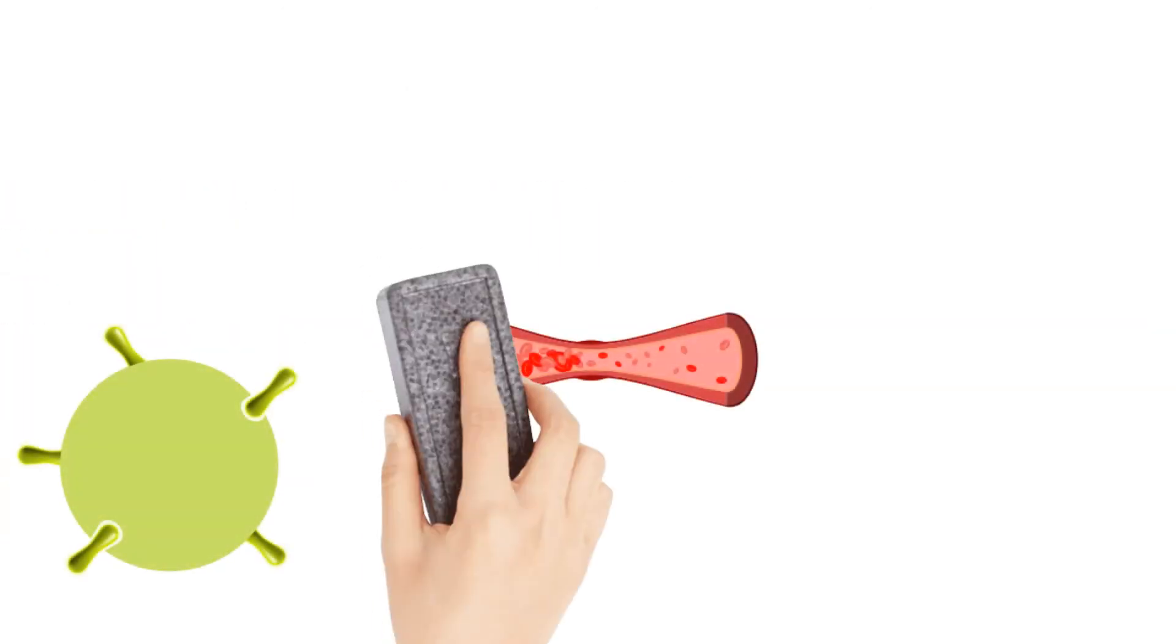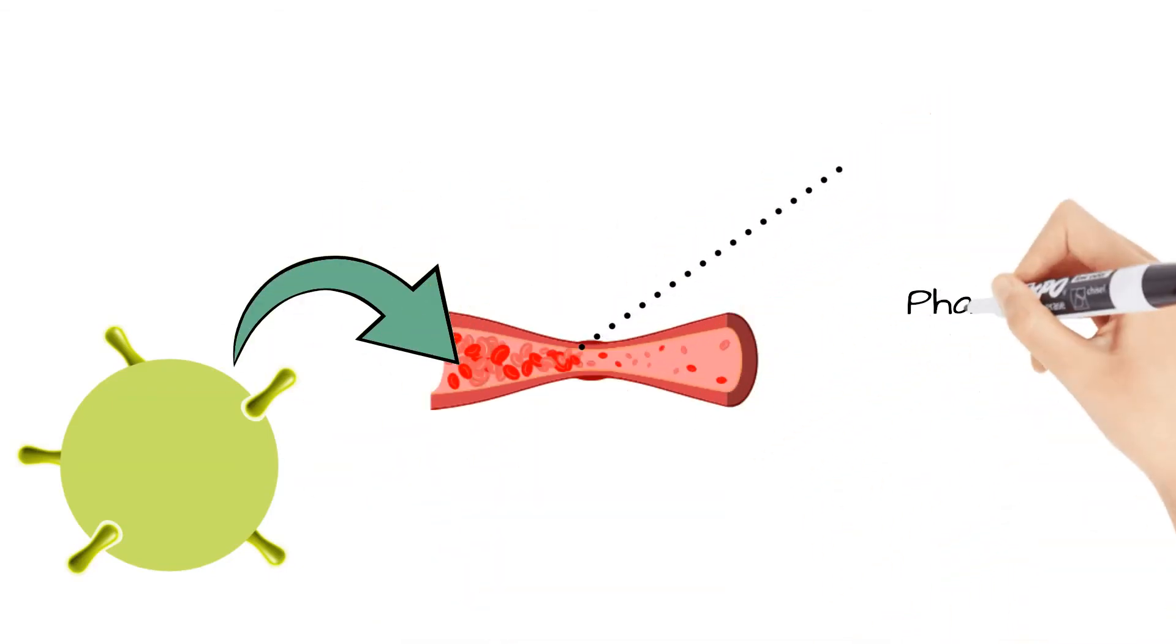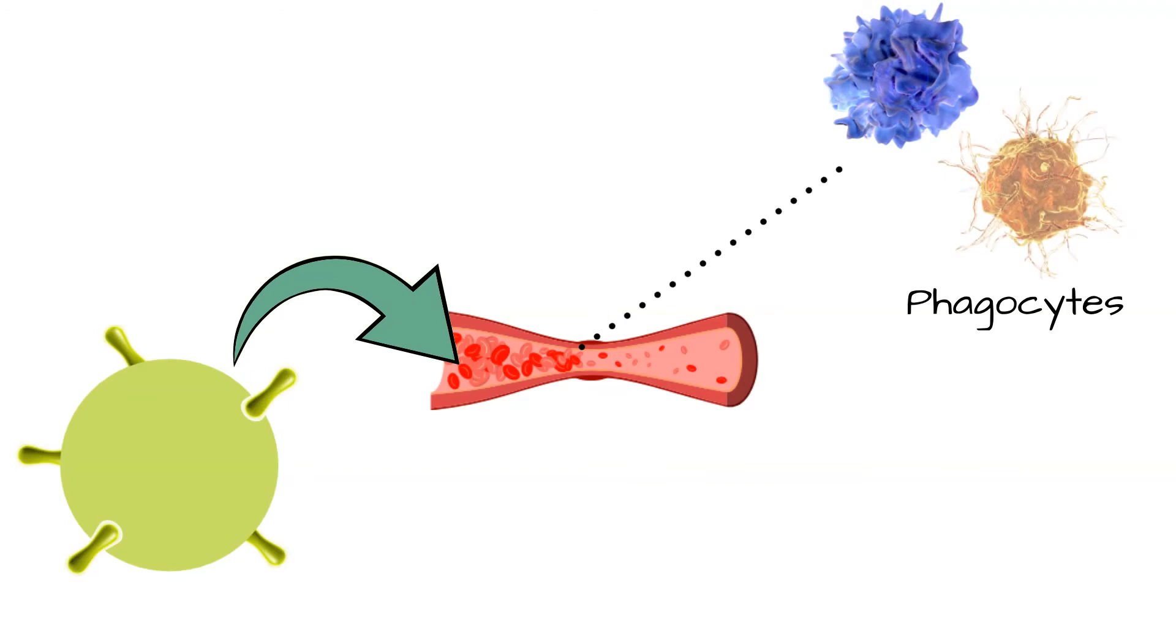When antigens enter the bloodstream, they encounter a variety of phagocytic cells, for example, dendritic cells and macrophages, which process the antigens.